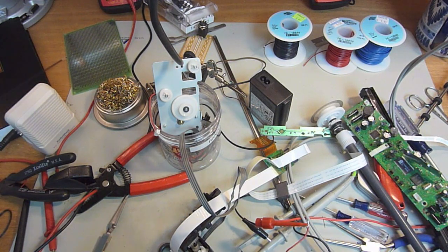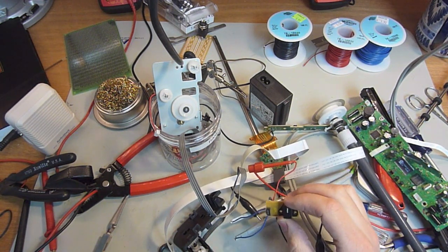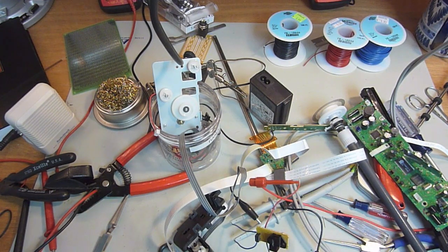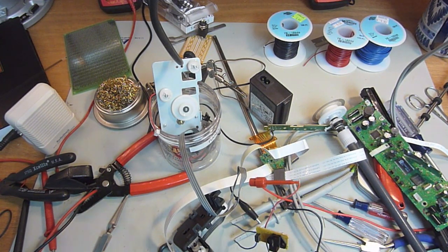What I want to do is show you how these quadrature photo interrupters work and I'll show you some Arduino code and how you can salvage these parts and use them for linear motion measurement. Alright, so let's get started.